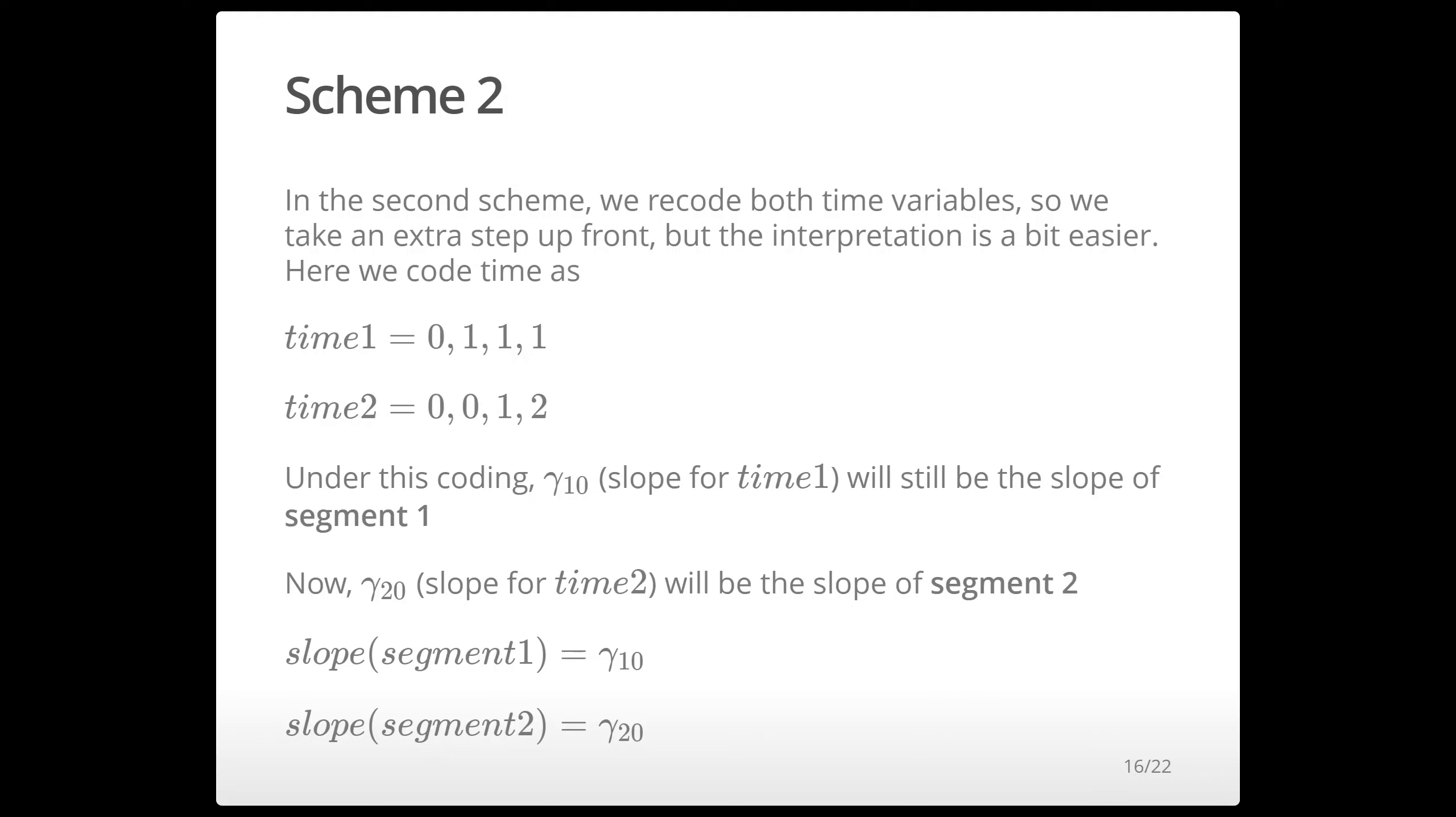And so essentially what we're saying here is the first variable represents the slope between baseline time and week 2 so we're saying that we want a slope here and then it levels off for this variable. And then here we're saying we want a consistent slope across these three time points that's level prior to that.